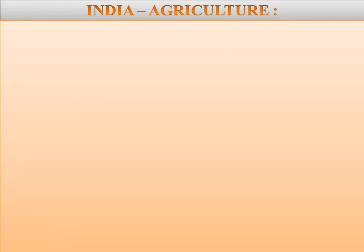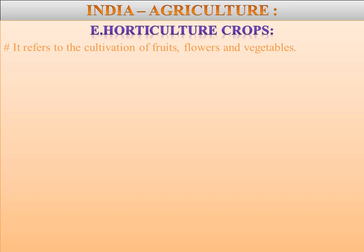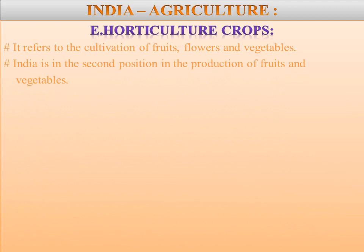Next we are going to learn about the last point of plantation crops: horticultural crops. It refers to the cultivation of fruits, flowers, and vegetables. Fruits and vegetables are important supplements to the human diet as they provide essential minerals, vitamins, and fibers required for maintaining health. India holds second position in the production of fruits and vegetables.